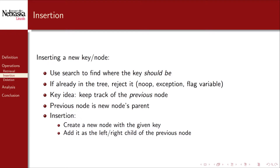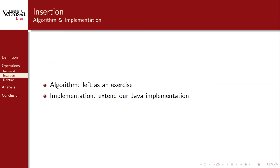The next operation is inserting a new node. The first step is to find where the new node should go — we reuse the same basic search algorithm. If the key value is already in the tree, we reject it via a no-op, an exception, or a flag variable. Otherwise, we insert it. The key difference is that in addition to traversing nodes, we keep track of a previous node so that when we reach the end of the tree, we have a reference to the parent of the new node. We then create the new node and add it as either the left or right child.